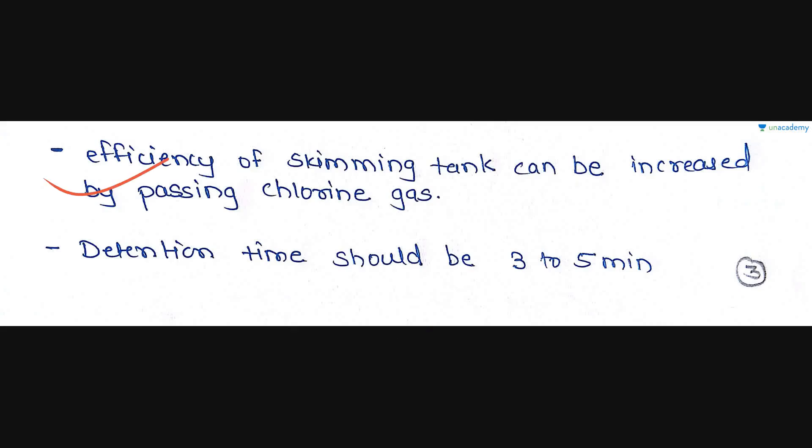The efficiency of the Skimming Tank can be increased by passing chlorine gas at 2 mg per liter of sewage along with the compressed air. Chlorine may also be added as a solution with the sewage discharge just ahead of the air diffuser plates. The action of chlorine is to destroy the protective colloidal effect of protein which holds the grease in emulsified form.